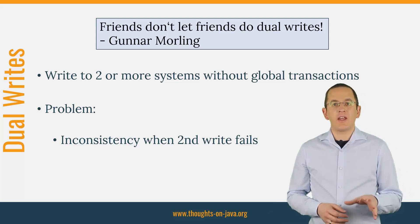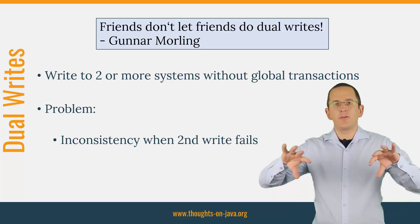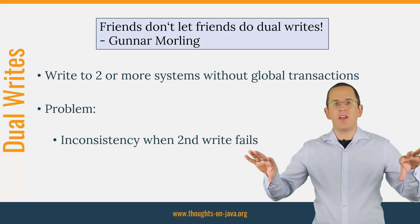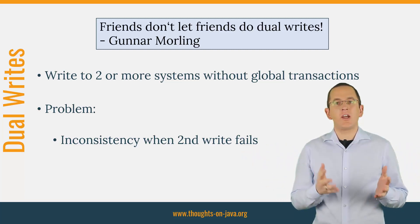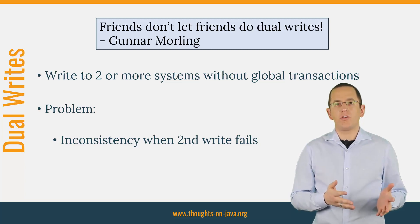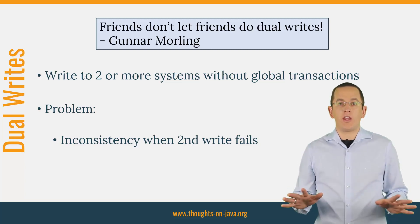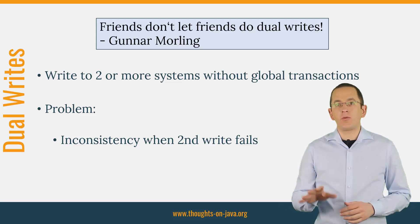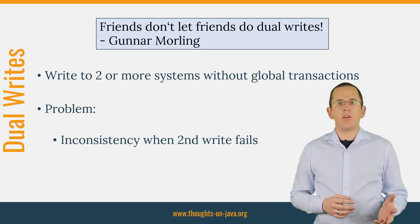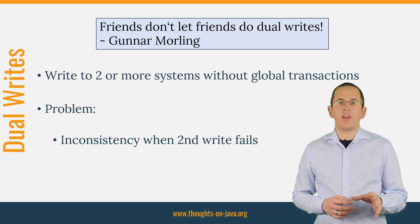To make it absolutely clear, eventual consistency and dual writes are 2 completely different things. Eventual consistency guarantees you that at some point, your data will be consistent in all systems. Dual writes don't guarantee you anything. If everything goes well, the data in all systems will be consistent. But if anything happens, you get inconsistent data and your job will be to find a way to fix that.